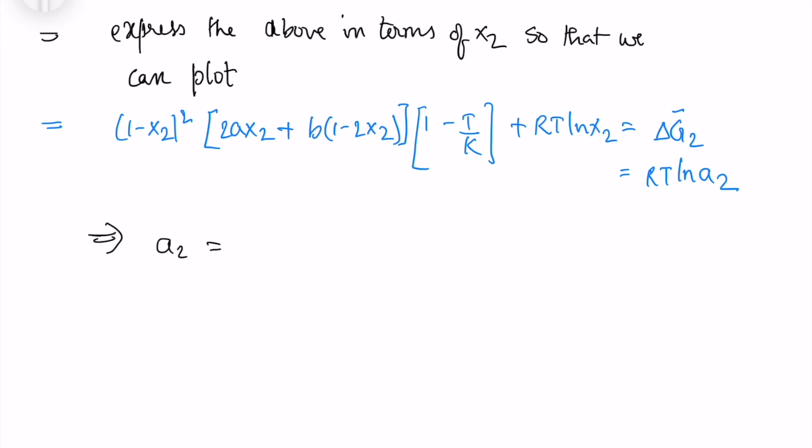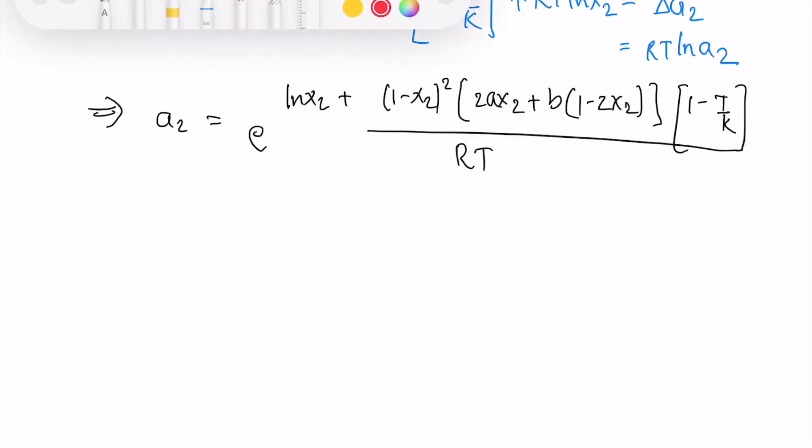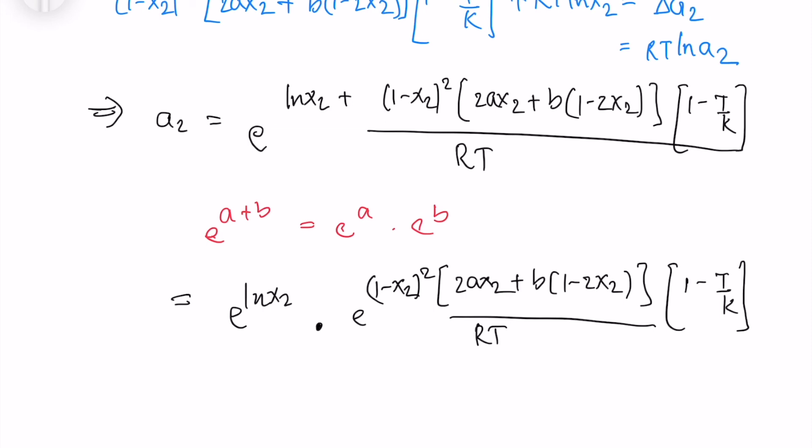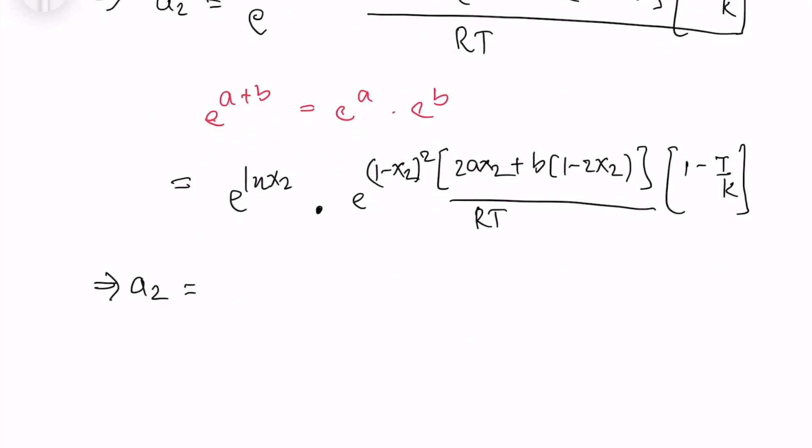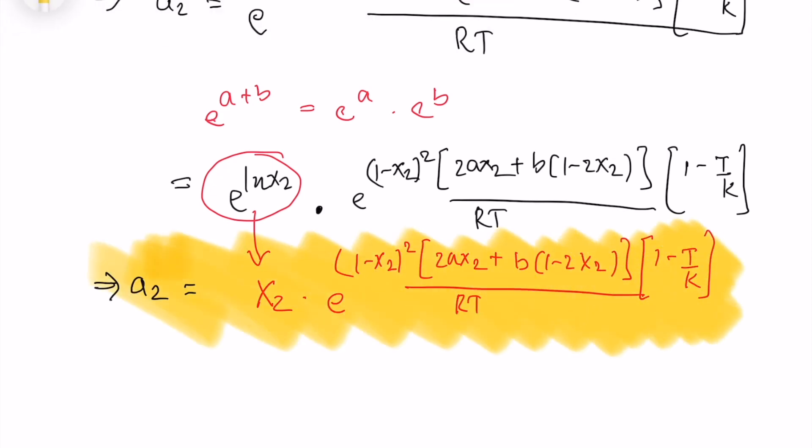Now the activity of zinc is e to the power of this expression. We know that e power a plus b is nothing but e power a into e power b. So I can separate all the terms. And you know e ln x2 is x2. So this is a much simpler equation and we will plot this equation.